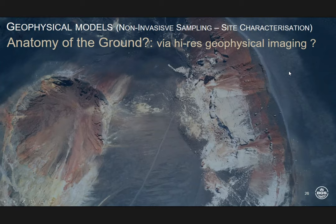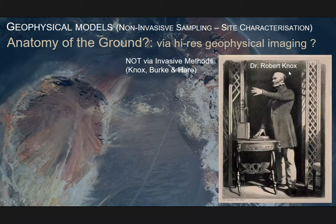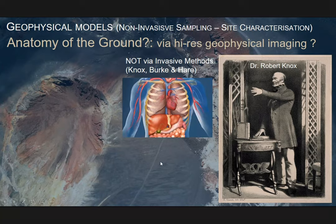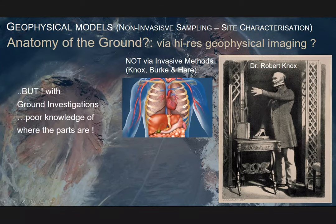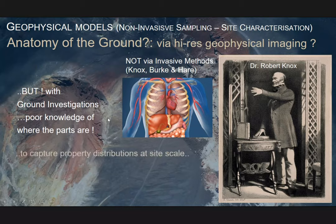There was a chap, Robert Knox — he had a site investigation company, Knox, Burke & Hare, and they employed very invasive methods. They were quite successful in that they formed a very good understanding of their subjects; because of these invasive methods, they knew where all the body parts or components of their subjects were. Unfortunately, in ground investigations we have very, very poor knowledge of where all the parts are — and that's the difference, I think.